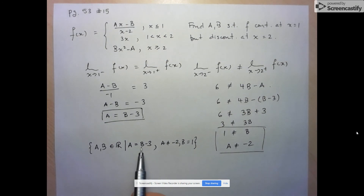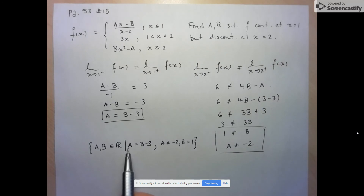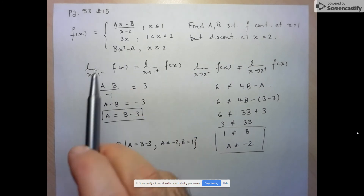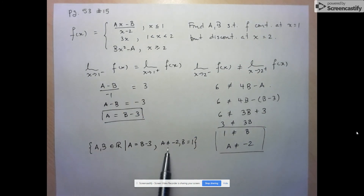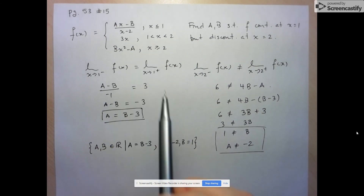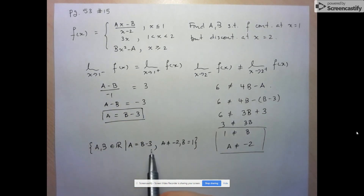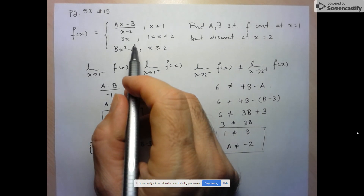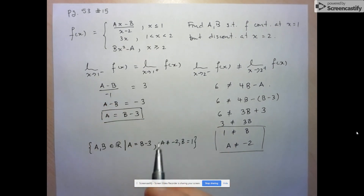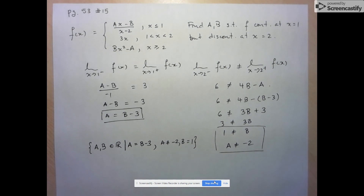For example, if B equals 17, then A equals 14 — you can check that this creates discontinuity at 2. In the end, we have infinitely many solutions. That's it for this one.